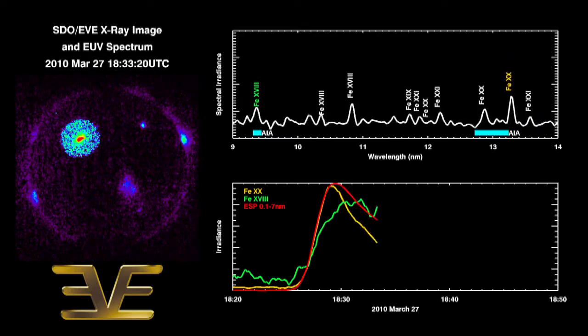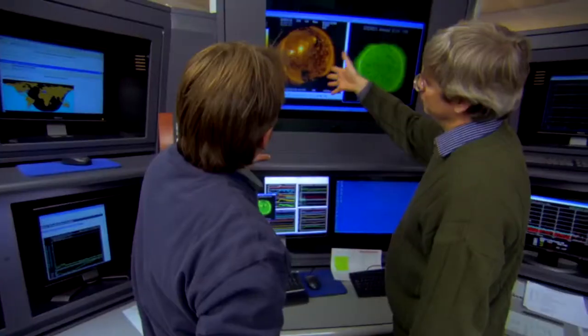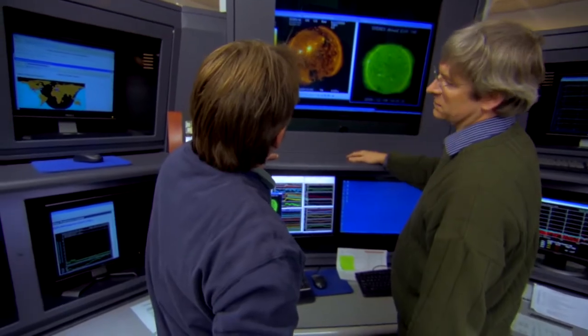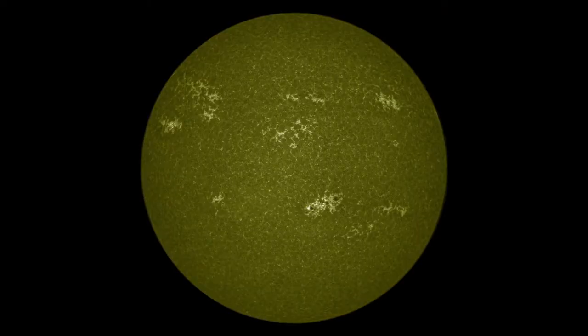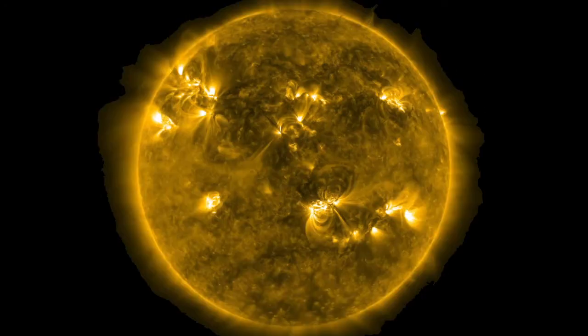The seriousness of an X-class flare pointed at Earth is why NASA and NOAA constantly monitor the Sun. NASA's heliophysics fleet of spacecraft can now see the Sun from every side and in many different wavelengths.